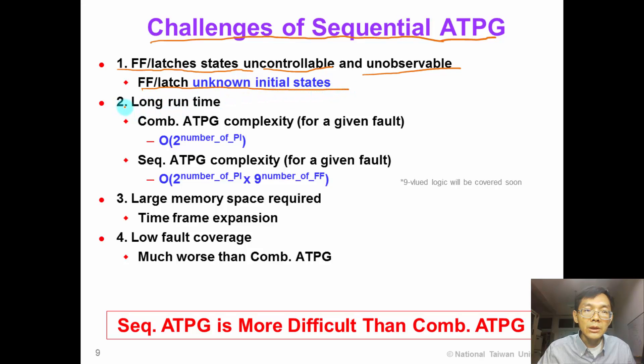The second issue is very long run time. For combinational circuits, we know that the worst case complexity for a given fault can be 2 to the power of primary inputs. For sequential ATPG, the complexity is even higher. For a given fault, the worst case running time can be up to 2 to the power of primary inputs times 9 to the power of the number of flip-flops.